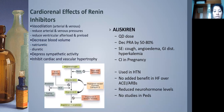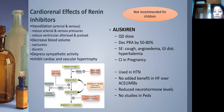Direct renin inhibitors: aliskiren inhibits renin from converting angiotensinogen to angiotensin I. It causes arterial and venous vasodilation, is natriuretic and diuretic, decreases sympathetic activity, and prevents cardiac remodeling. It is given as a single daily dose and used in hypertension and some heart failure in adults. However, there are no pediatric studies and it is not recommended for children — mentioned here just for awareness.